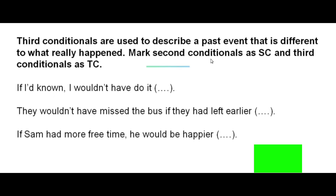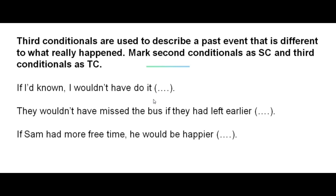Now let's review and practice a bit. Remember that third conditionals are used to describe a past event that is different to what really happened. Read the following sentences and mark second conditionals as SC and third conditionals as TC. If I'd known that, I wouldn't have done it — third conditional. They wouldn't have missed the bus if they had left earlier — third conditional. If Sam had more free time, he would be happier — second conditional.